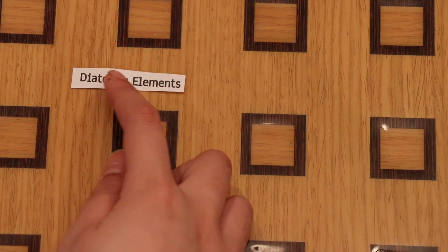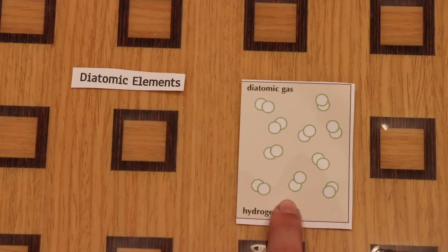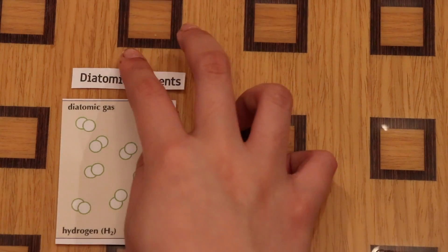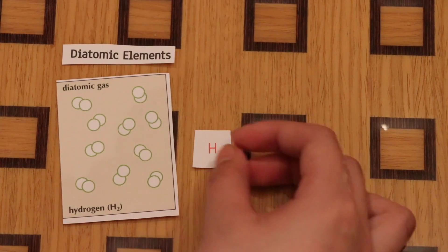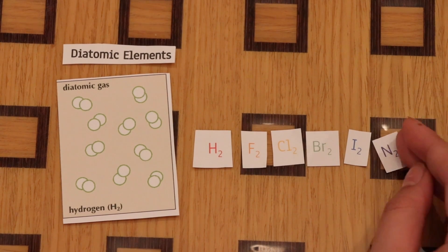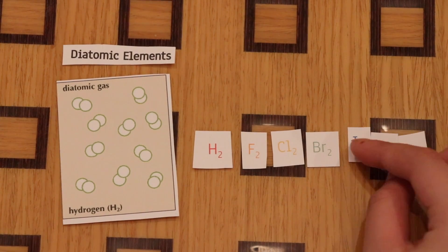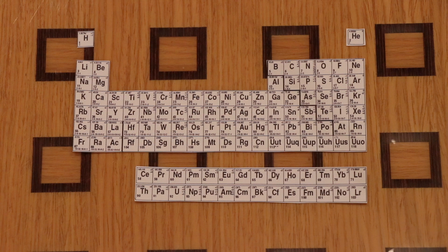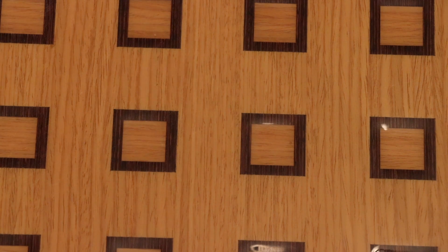Here we have the diatomic elements. The diatomic elements include hydrogen, fluorine, chlorine, bromine, iodine, nitrogen, and oxygen. For fun, the diatomic elements form a seven on the periodic table.